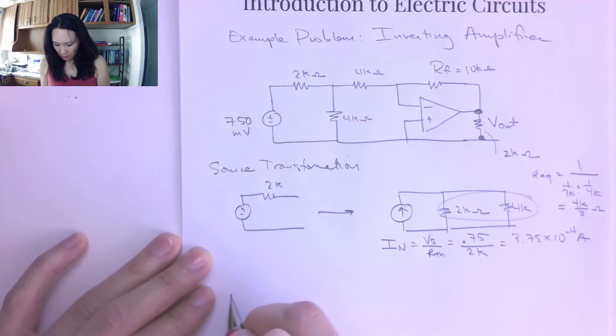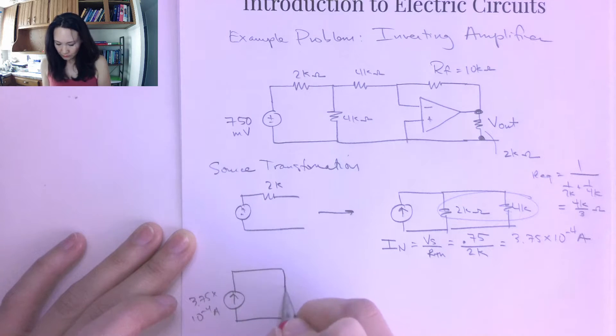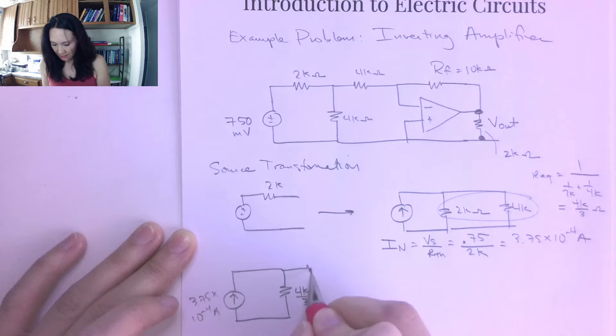So let me do that. Now my circuit is equivalent to the current source here of 3.75 times 10 to the negative 4 amps. And then I have one resistor here, equivalent resistor here, of value 4k over 3. And then I still have that 4k ohm resistor, and then here is where it goes into my op amp. Okay.